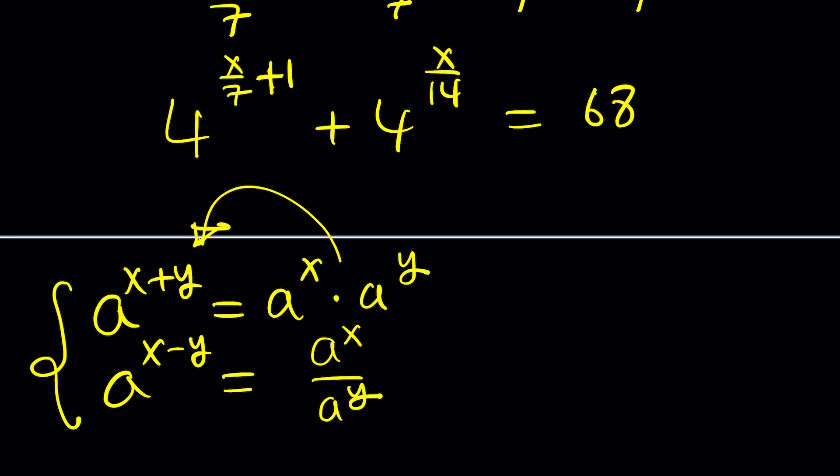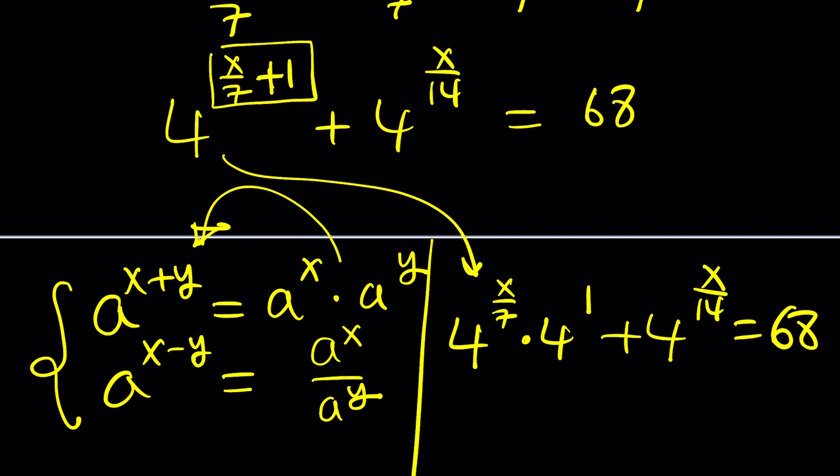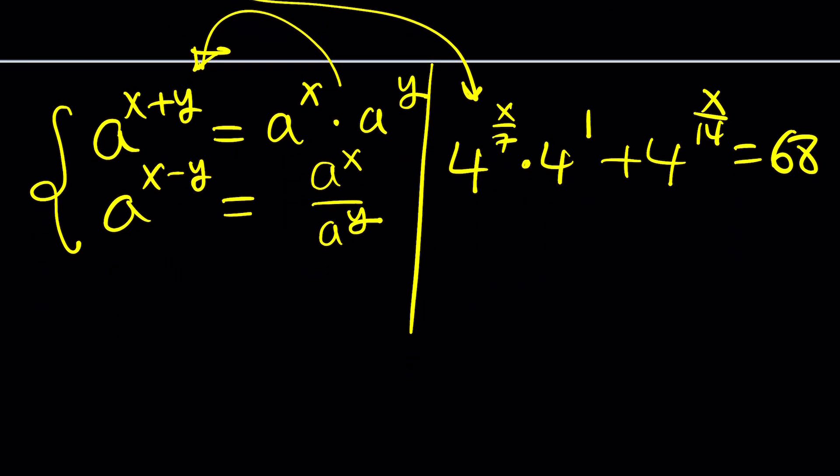Notice that x over 7 and 1 are being added, so that just means we can write this as 4 to the power x over 7 times 4 to the power 1. Do you see what I'm talking about? When you multiply these powers you're going to add the exponents, and the exponents are added here so we can reverse it. Make sense? Plus 4 to the power x over 14 equals 68. Awesome. The next step would be to find again a relationship but now it's a little easier. First of all, we have 4 to the power 1 which can be written as 4, so I can write this as 4 times 4 to the power x over 7 plus 4 to the power x over 14, and now it's equal to 68.